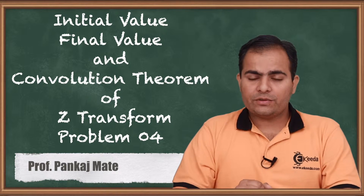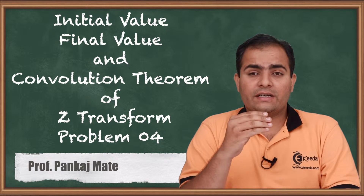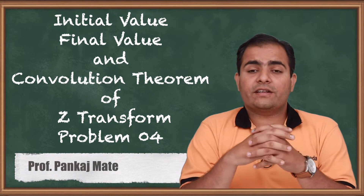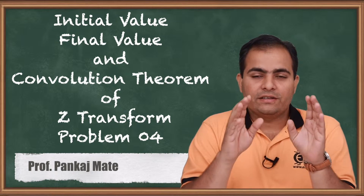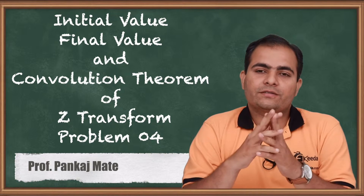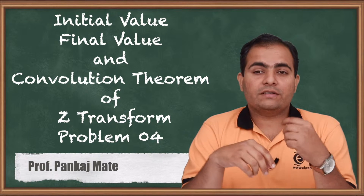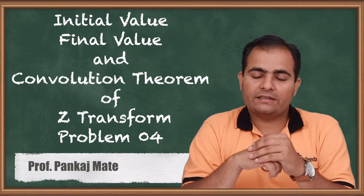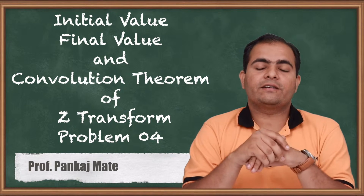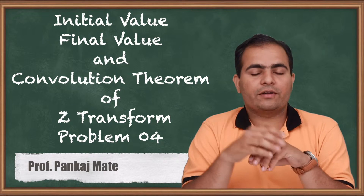Now, what does the convolution theorem mean? Simply apply convolution — find the Z-transform of two functions and then multiply them. The convolution theorem states that the Z-transform of the convolution of two functions is simply the product of their individual Z-transforms. Whenever a convolution-based question is asked, they will give you two different samples; apply Z-transform on each and multiply to get the result.